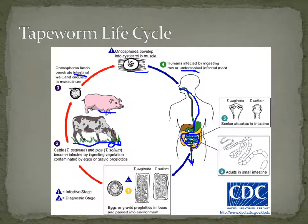It's worth noting that the two different species shown in the diagram are different species of tapeworms — one is more likely to infect cattle, and the other is more likely to infect pigs.